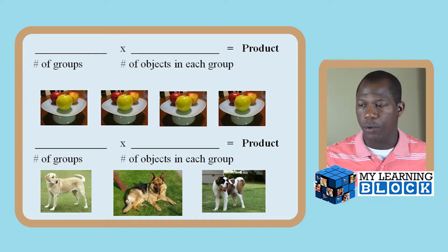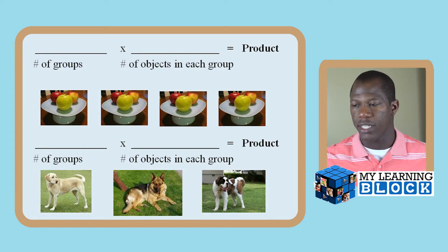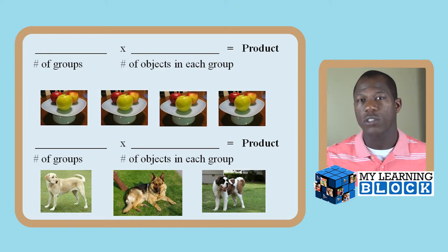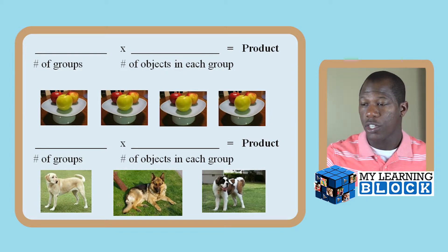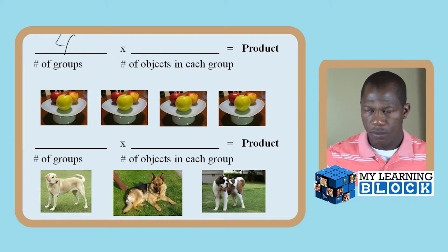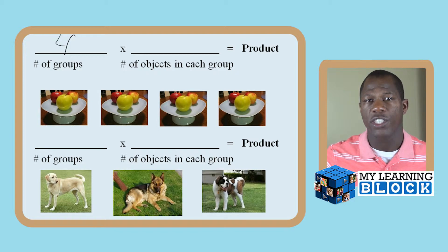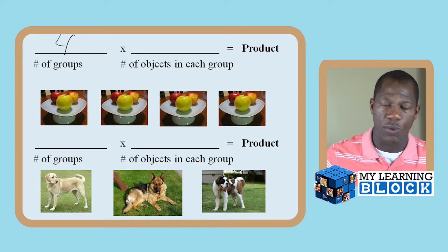As you see here in the figure, we have number of groups times the number of objects in each group, and that equals the product, which is the answer. For the first one we see that there are three apples on each plate. Let's count the number of groups. We have one, two, three, four plates. So in this first one, number of groups, we have four. These are some of the words you want to use with your child: how many groups do we have and how many objects do we have in each group.